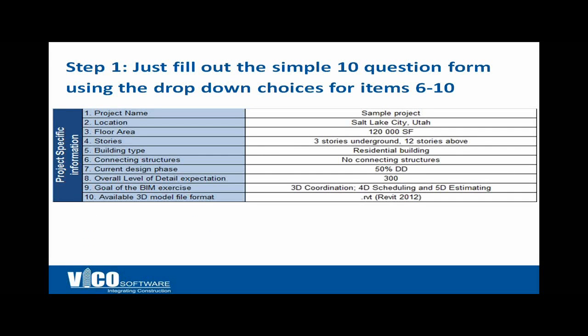It really is a very simple process. We've created a form that's pre-populated with drop-downs, so you would type in your project name and location, a short description of the project. There are pre-populated drop-downs of all the things we would expect to see. You can add something else if maybe there's not an 80% DD there, but that's the phase you are at according to the design team — you could just put in the 80% DD. It's very easy to fill the form out and get us started.